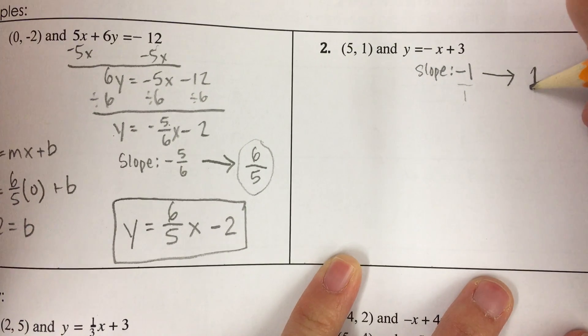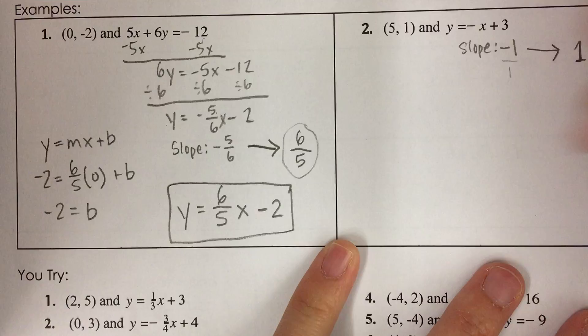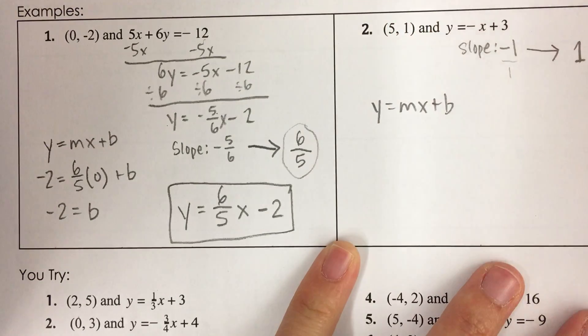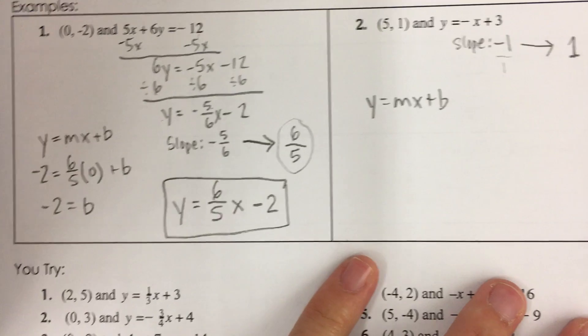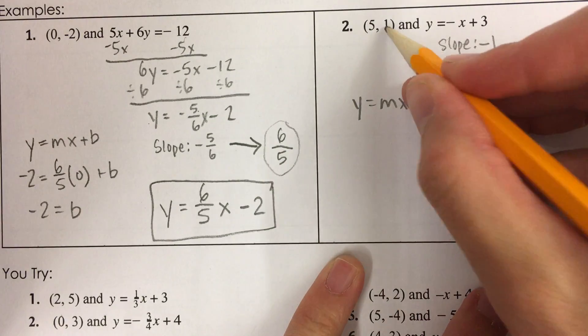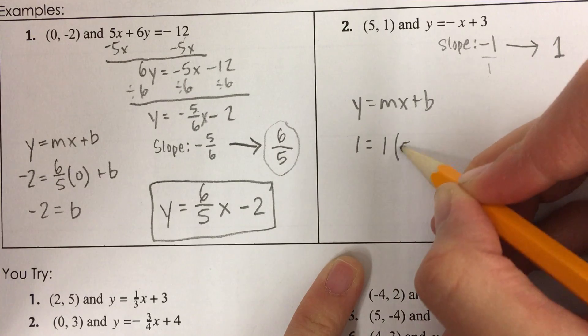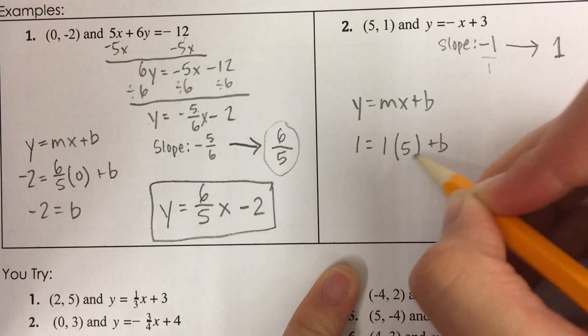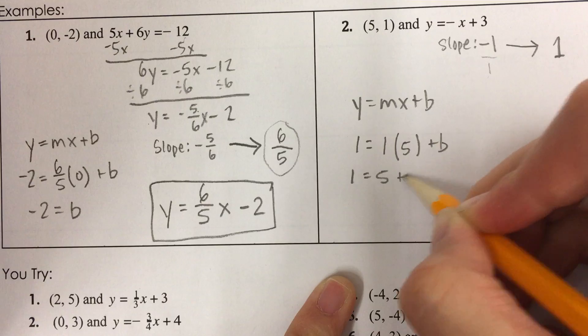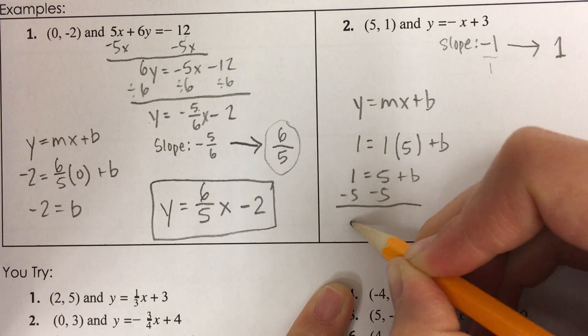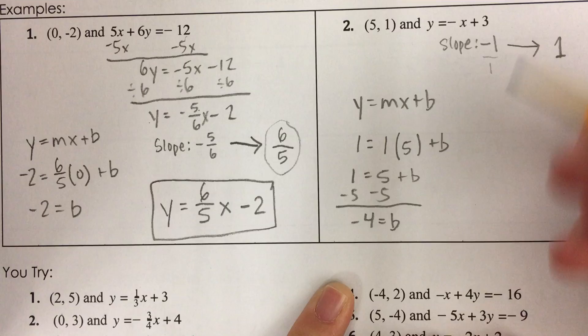Okay, that is my slope, positive 1. So now, let's use my y equals mx plus b to find my y-intercept. So I'm going to plug in y equals mx plus b. 1 times 5 is just 5.